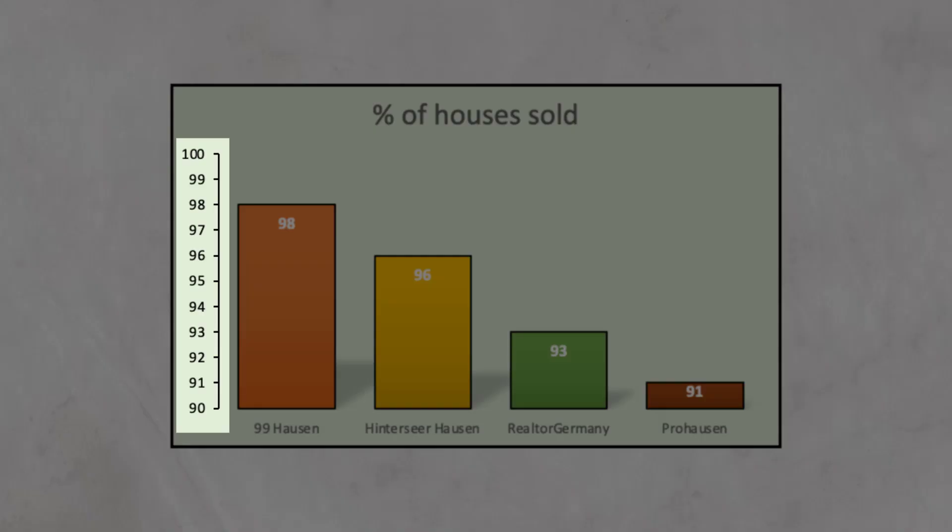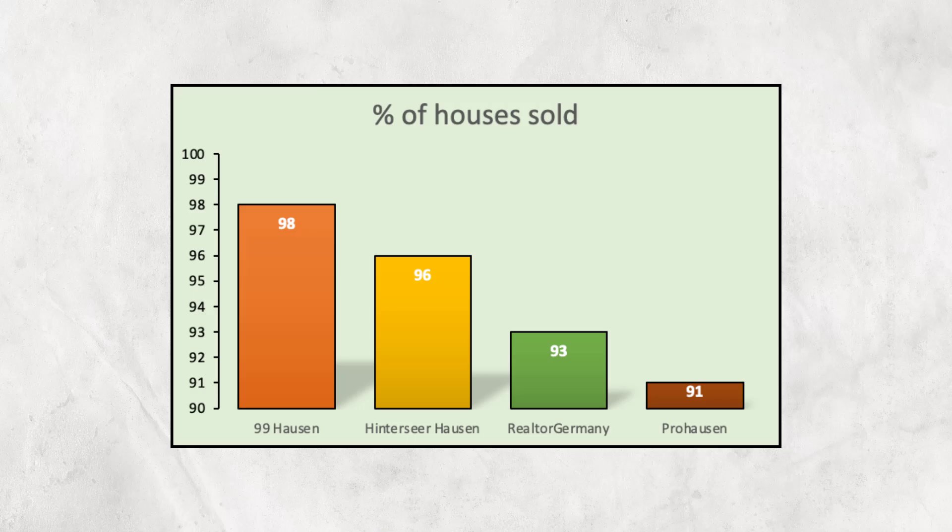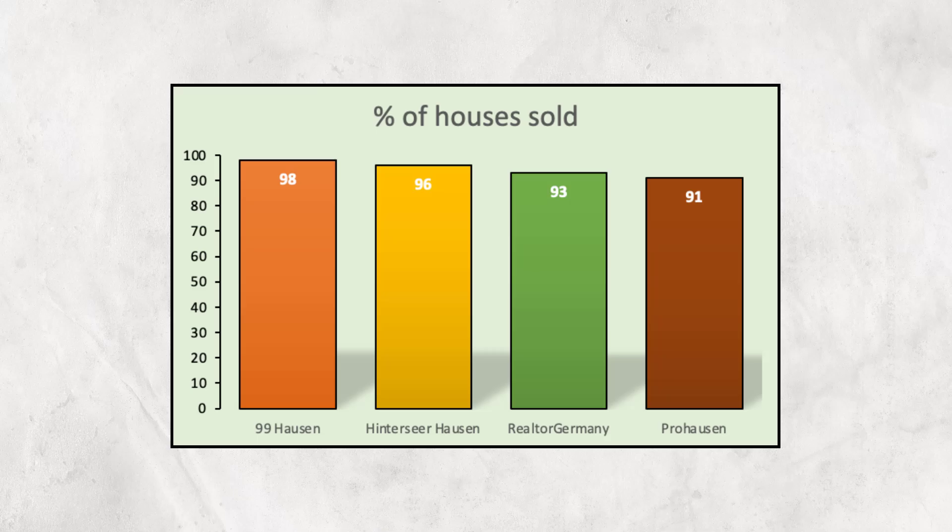By starting the y-axis at 90, the differences between the companies are exaggerated to make the consumer more prone to believing that Neunzig Hausen is the superior realtor. If we instead started the y-axis at zero, it would look like this, a far less dramatic graph.